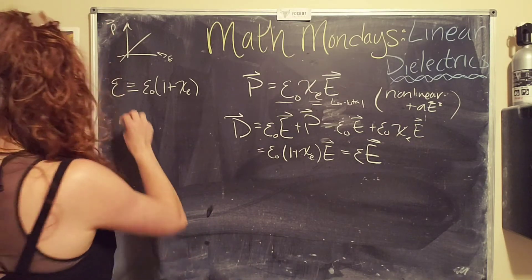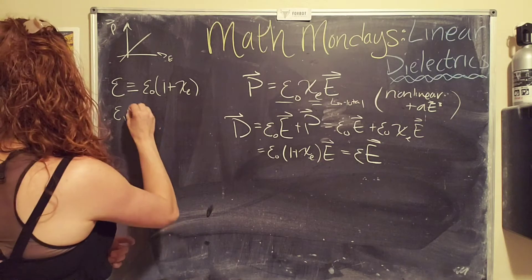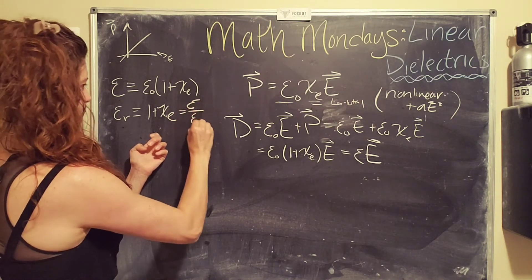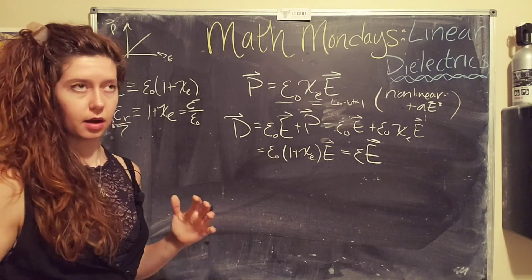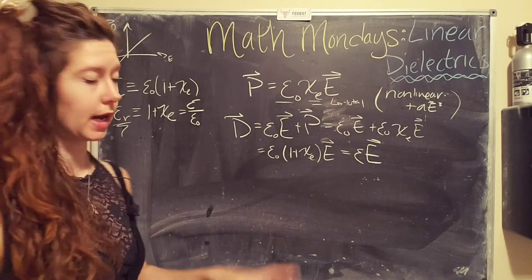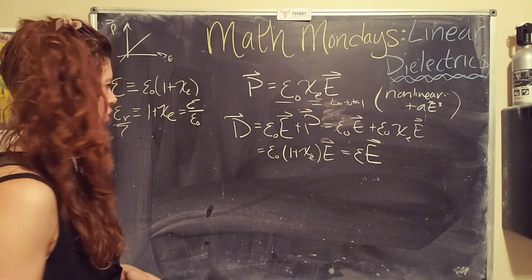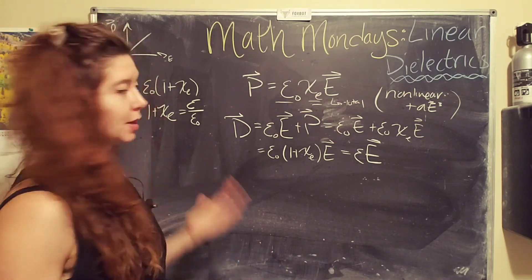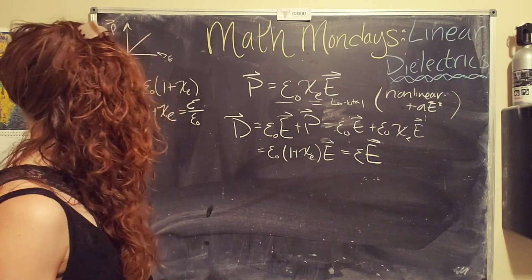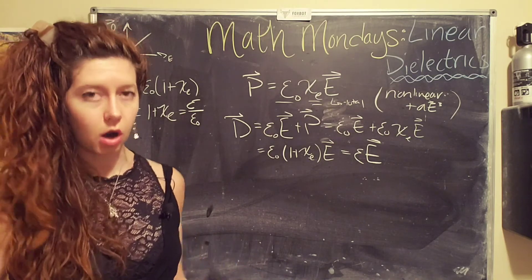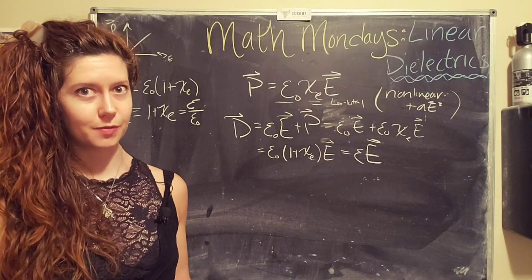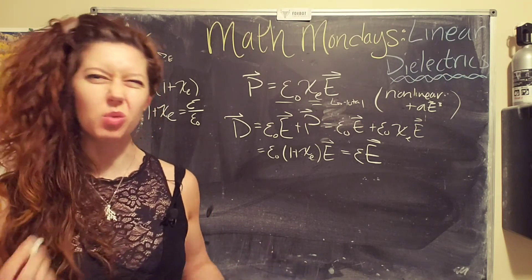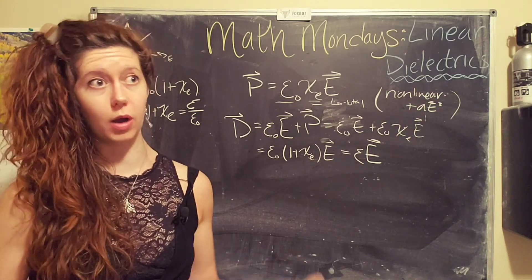And I also want to mention the relative permittivity, which is epsilon subscript R, which is defined to be just one plus the susceptibility, or epsilon divided by the vacuum permittivity. And this is kind of nice because it kind of mostly just depends on the material that we're looking at instead of also the vacuum permittivity. And it also kind of gives you this interesting ratio. This is also called the dielectric constant. So that might be a more familiar term to you. It's typically what I see when I am doing researchy things. So again, the relative permittivity or the dielectric constant is a property of the material.